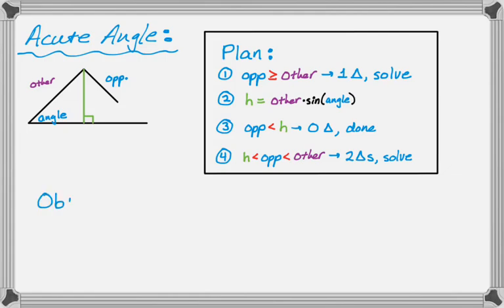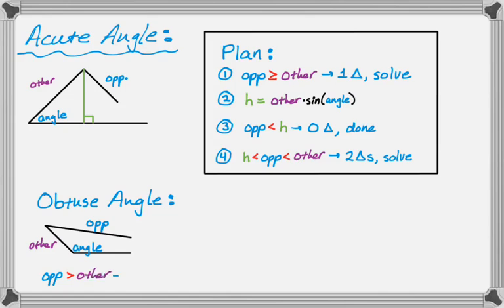Another possibility is that you could be given an obtuse angle. It's not anywhere near as exciting. There's only two things that can happen. You could have that the opposite is greater than the other, in which case you're going to get one triangle, use law of sines to solve it, and move on. You could have opposite is less than or equal to the other side. That's going to give you no triangles, and you're done.